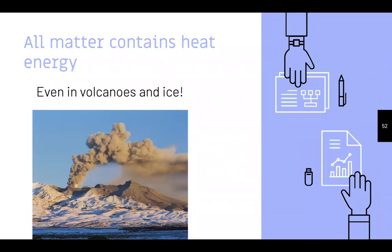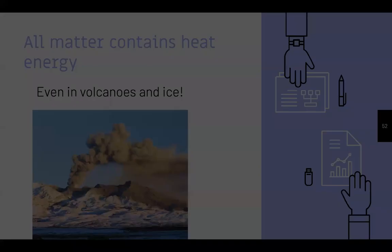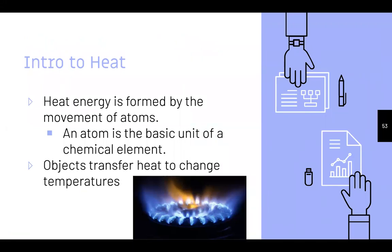All matter contains heat energy — even volcanoes and ice contain heat. It's important to understand that even something cold will have heat. Heat energy is formed by the movement of atoms; an atom is the basic unit of a chemical element. Objects have the chance for heat to change temperatures.